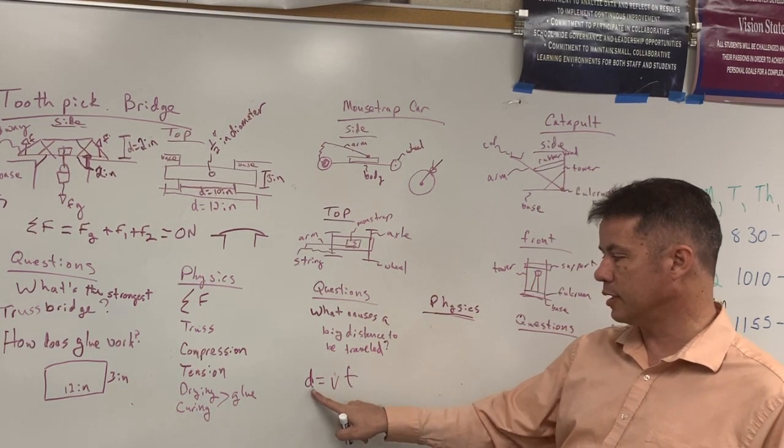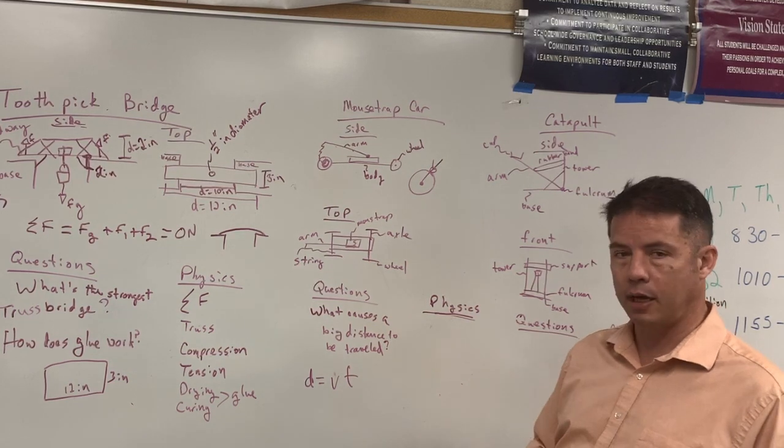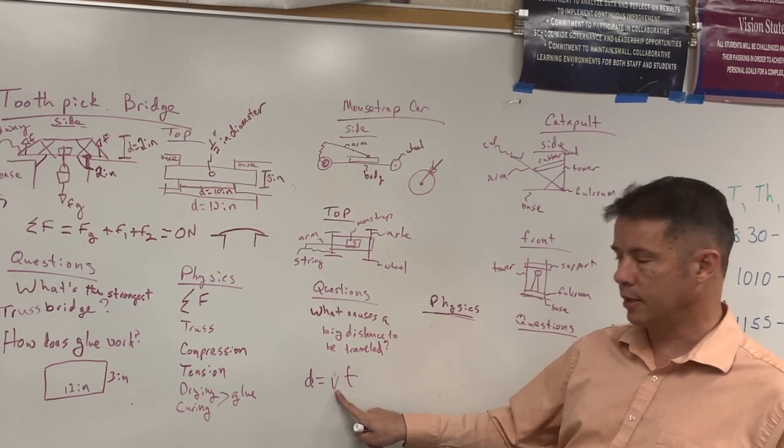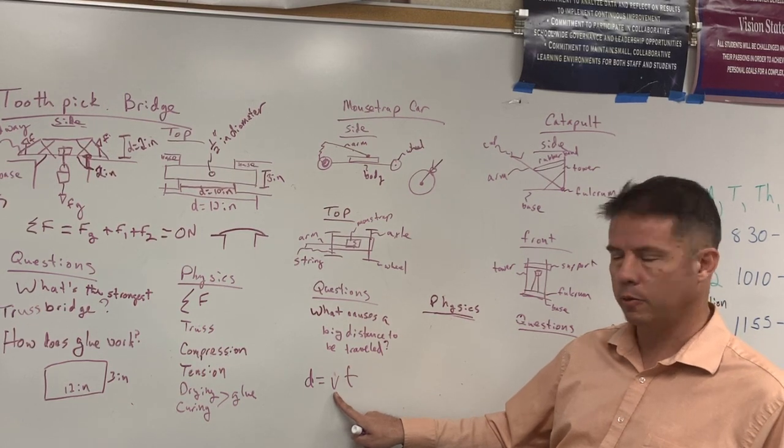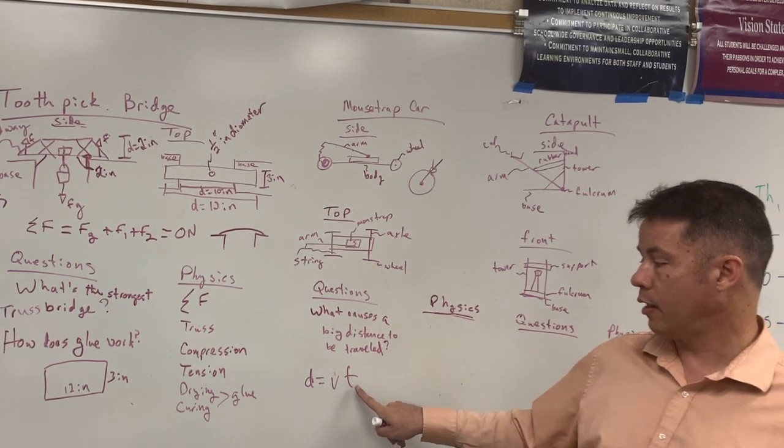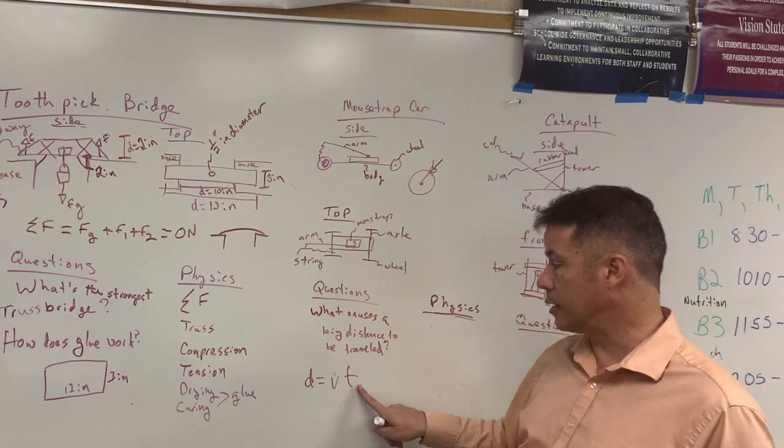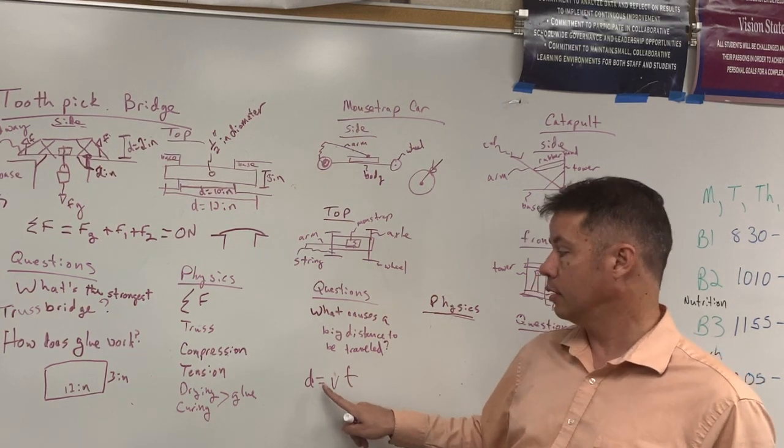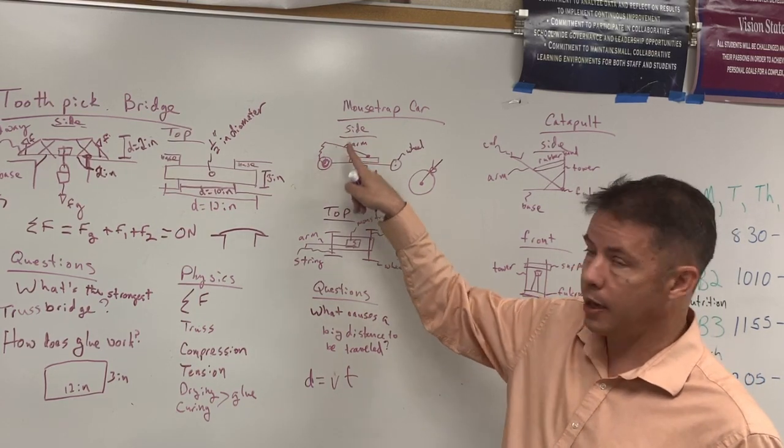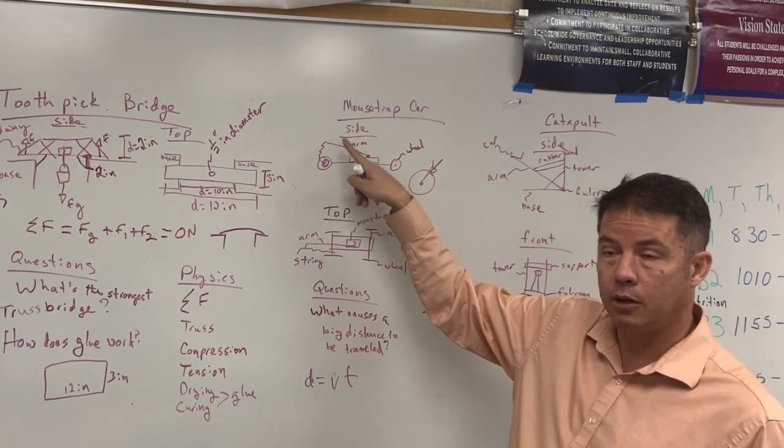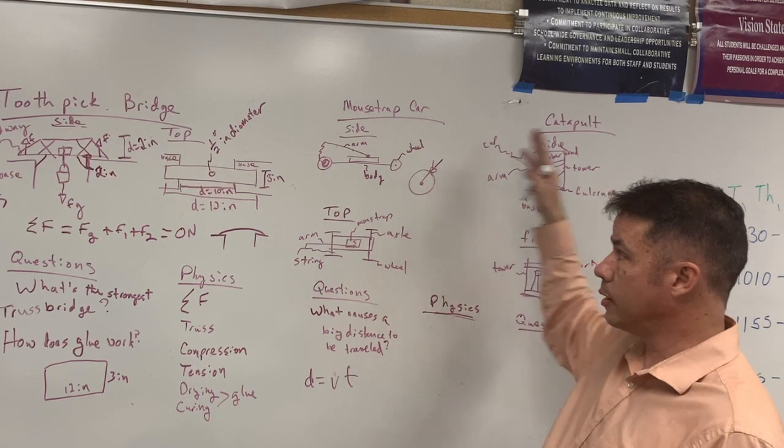D equals distance equals velocity times time. Notice this. Velocity. Wait, it's not V equals. What's going on? The amount of time that the velocity is applied tells me what the distance is going to be. So the amount of time that this velocity, this spinning wheel is applied will tell me how far it is going to go.